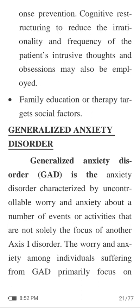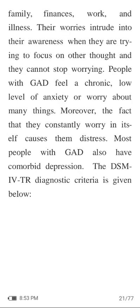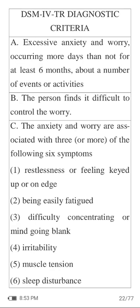Generalized anxiety disorder, or GAD, is an anxiety disorder characterized by uncontrollable worry and anxiety about a number of events or activities that are not solely the focus of another disorder. The worry and anxiety among individuals with GAD primarily focus on family, finances, work, and illness. Their worries intrude into their awareness when they try to focus, and they cannot stop worrying. People with GAD feel a chronic low level of anxiety or worry about many things, and the fact that they constantly worry itself causes them distress. Most people with GAD also have comorbid depression. The DSM-IV-TR diagnostic criteria include excessive anxiety and worry occurring more days than not for at least six months about a number of events or activities, and the person finds it difficult to control the worry.